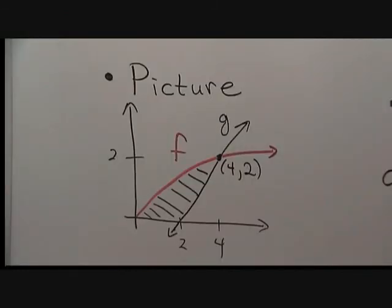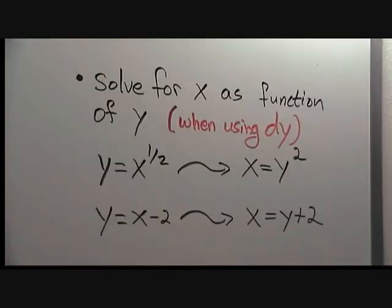Next, we drew an accurate picture correctly depicting the intersection point at x equals 4 and y equals 2. We decided to use horizontal strips in the picture, which corresponds to dy. That required us to solve for x as a function of y.